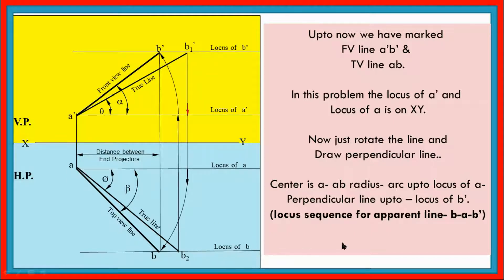First B, one hyphen, put A. Now we have a local sequence — in this sequence, a perpendicular line from B-dash. That is the sequence. Now the sequence is completed: B, that means A, that means B-dash. This is the sequence — in this locus sequence, we can do the sum. The process is the apparent line.